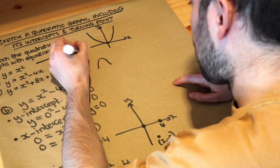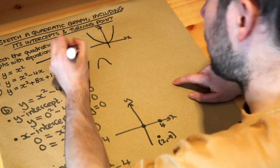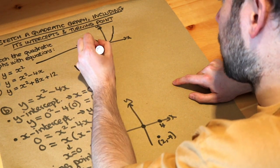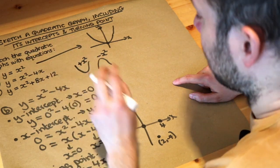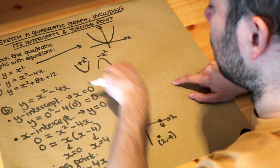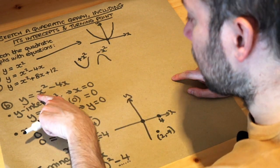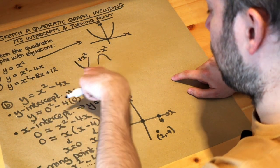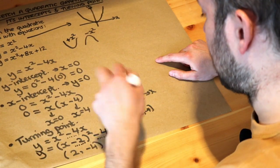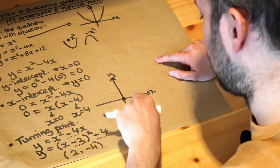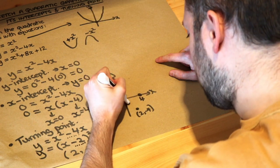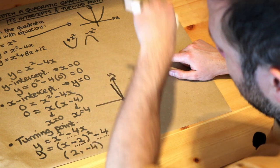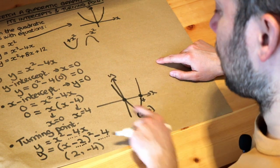If you have a positive x squared term it will be a u-shape; if it's a negative x squared term — like minus 2x squared or minus 3x squared — it's going to be an upside-down u, a hill shape. This is a positive x squared term, so it's the u-shape. You can also see that the only way to connect these three points is with a normal u-shape like that.